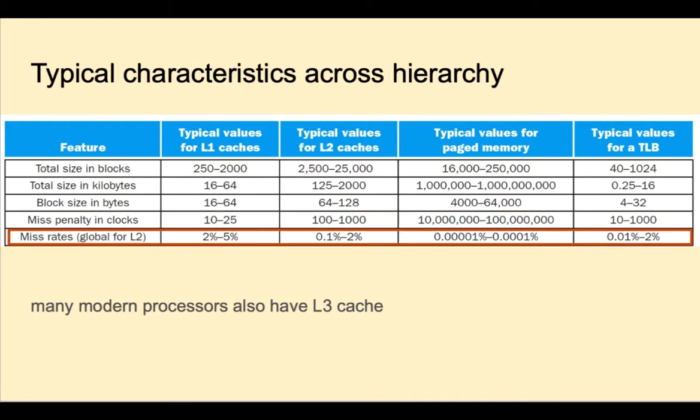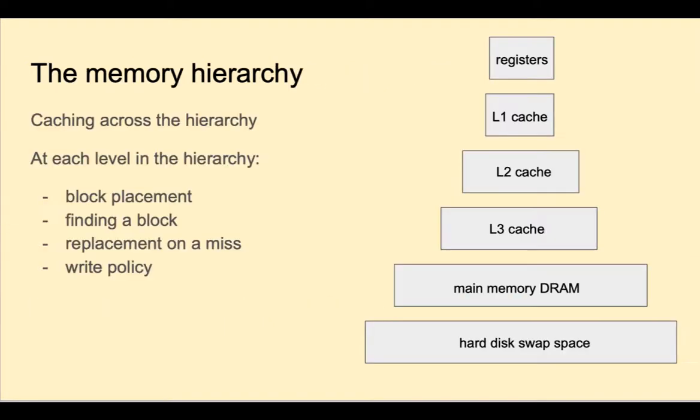The miss rates for L1 caches are typically very low, 2 to 5%. They're even lower for the L2 caches, 0.1 to 2%. Extremely low for pages, and quite low for the TLB as well. As we go down the memory hierarchy, the miss rates go down as we just saw in the previous table, in part because the sizes are larger as we move down. The memory hierarchy allows us to realize the benefits of very fast memory at the highest levels, which are supported by the lower levels.